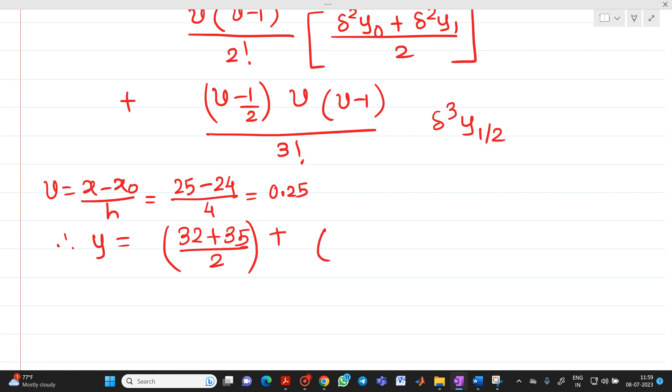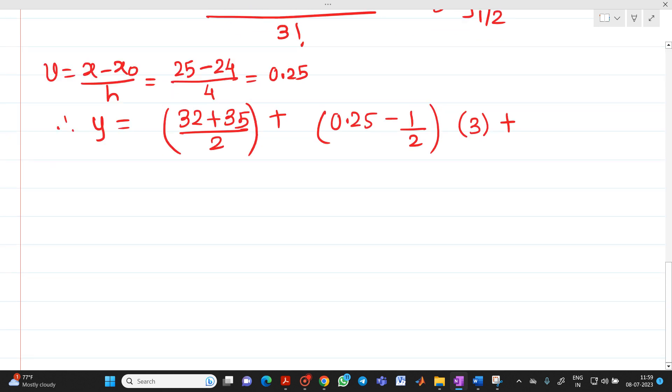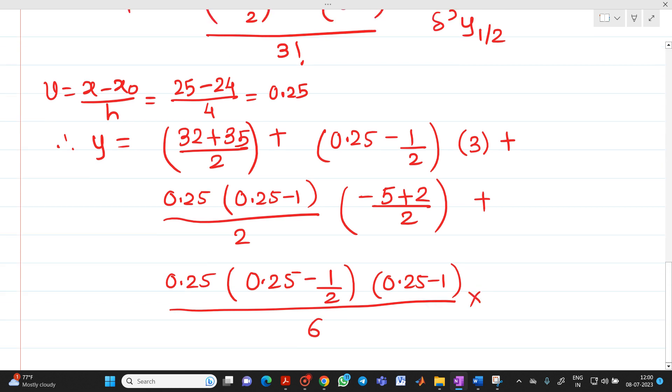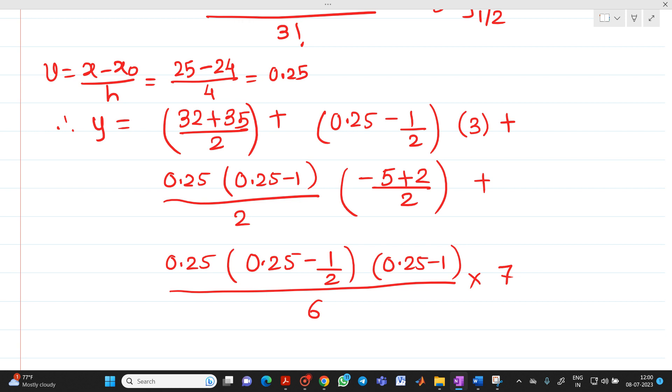So if you substitute in the formula, v - 1/2. So (0.25 - 1/2) × 3 + [0.25 × (0.25 - 1)]/2 × [(-5 + 2)/2] + [0.25 × (0.25 - 1/2) × (0.25 - 1)]/6 because 3 factorial is there, into Δ³y₁/₂ which is equal to 7.